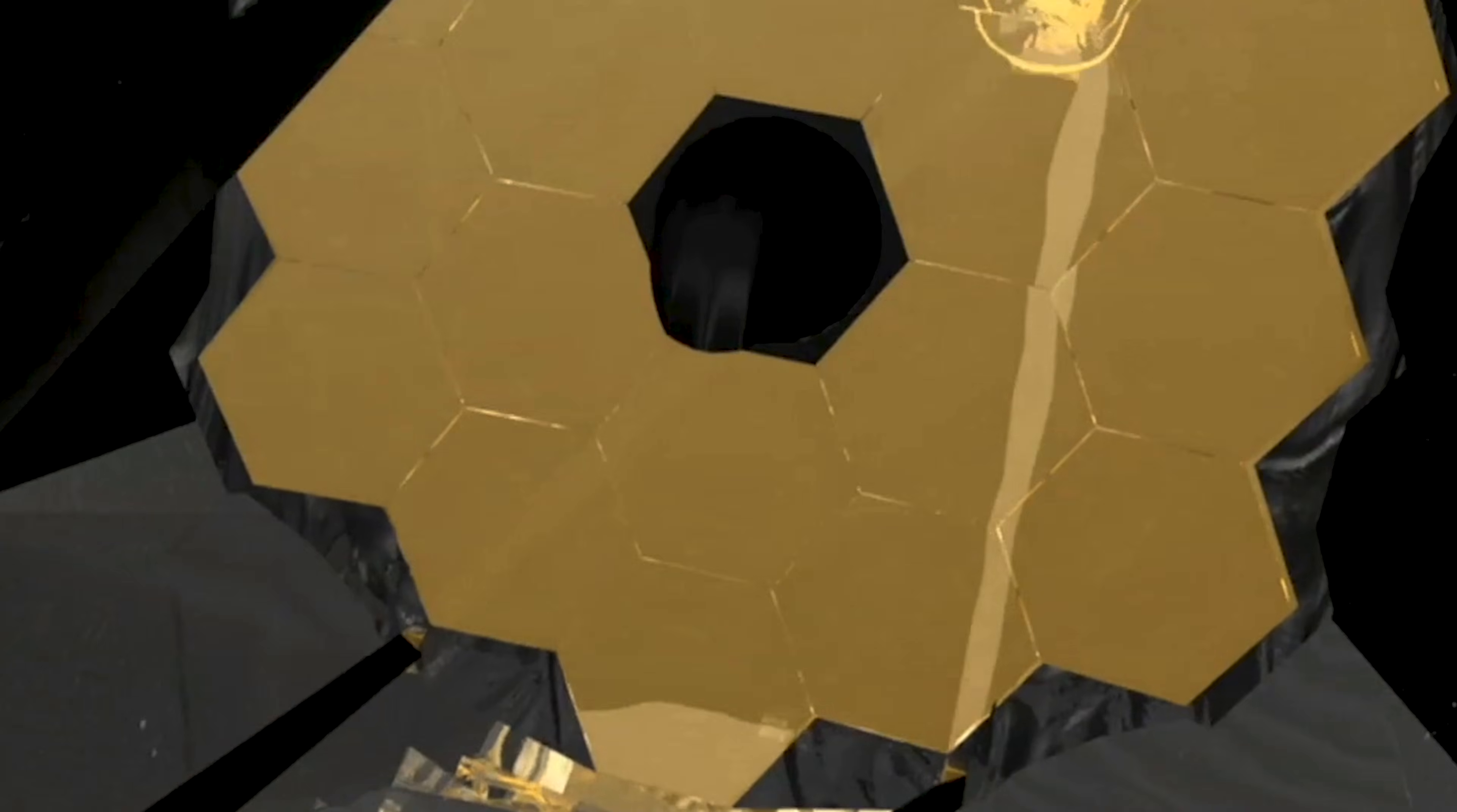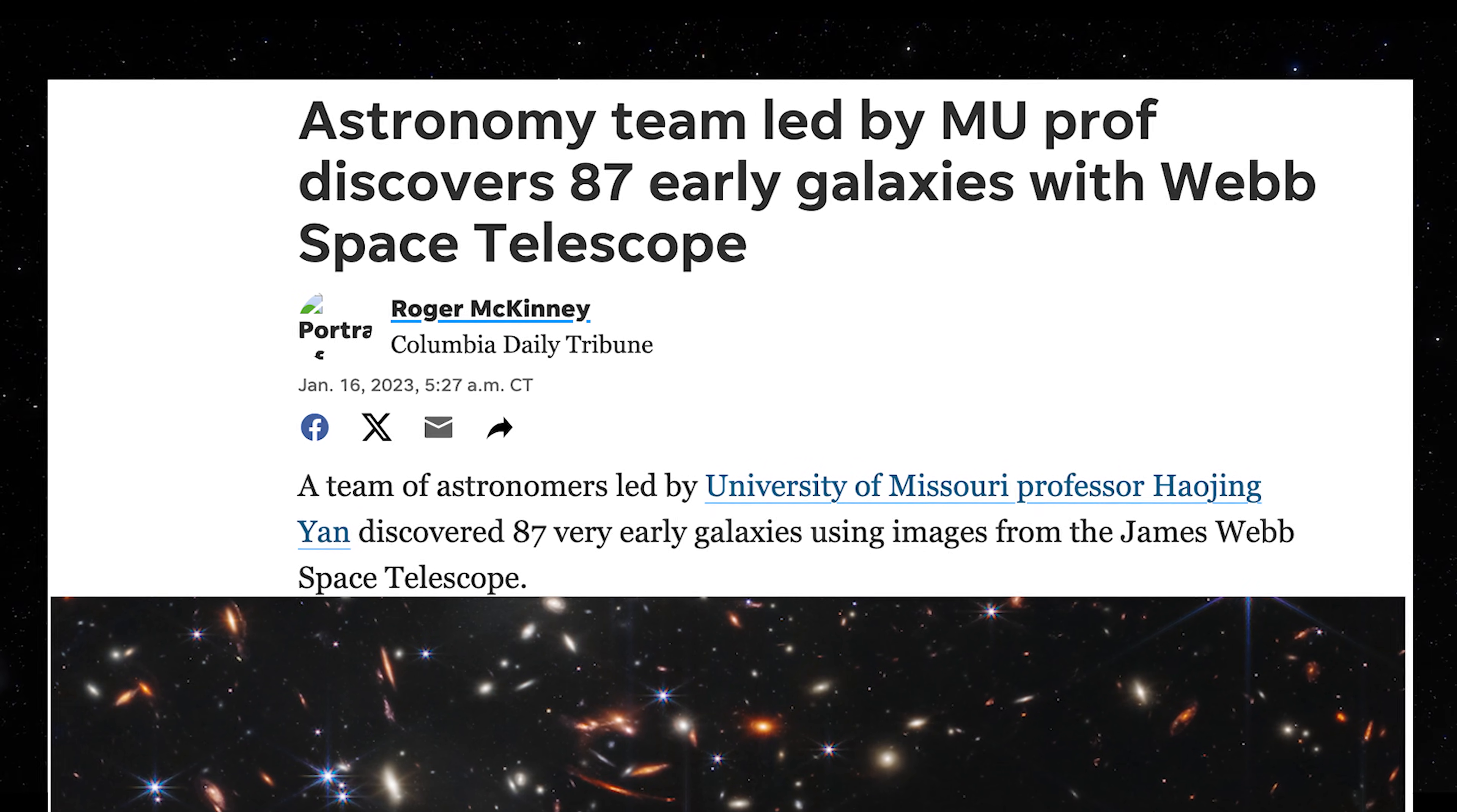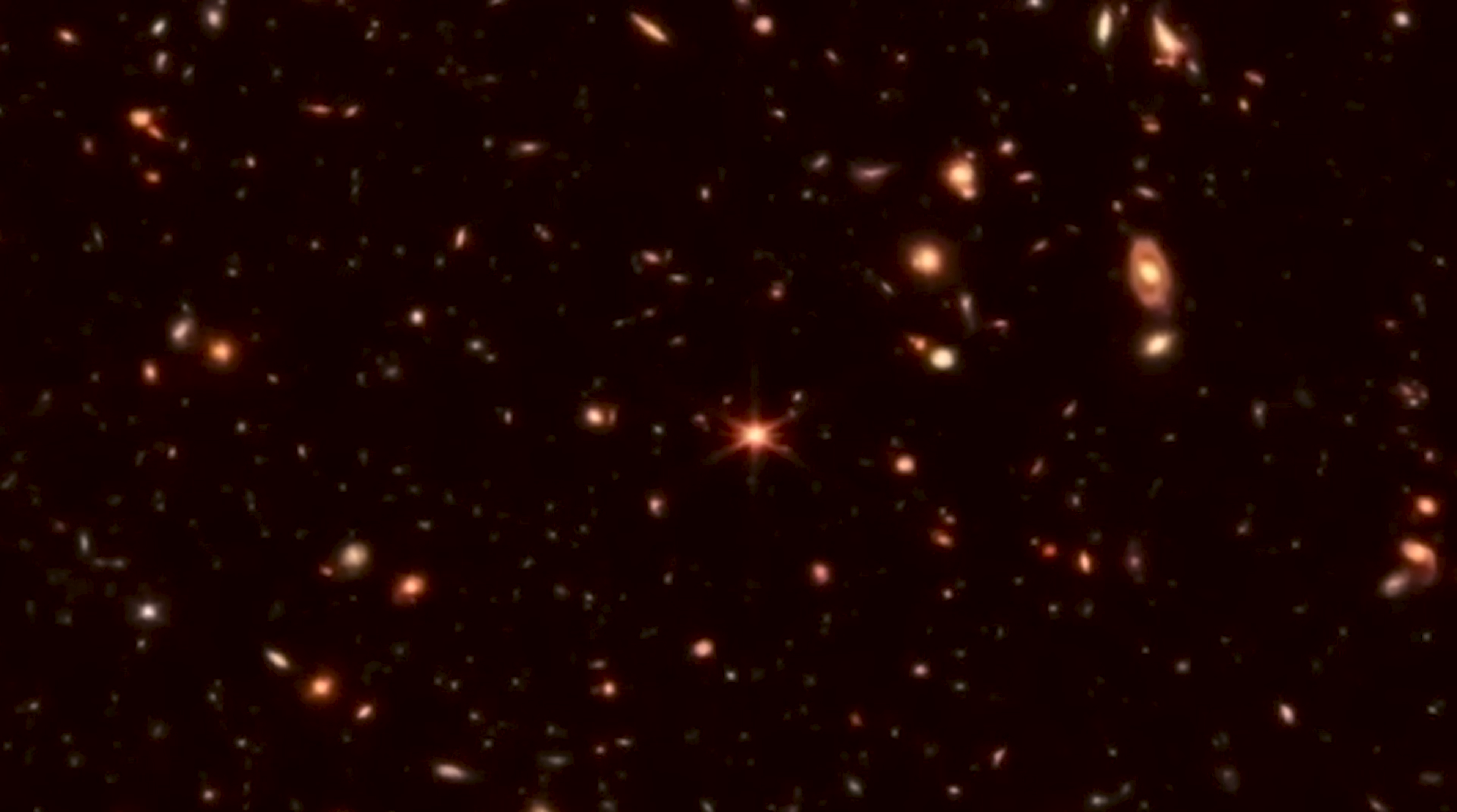When astronomers aimed Webb at the deepest regions of space, they expected to see the universe learning how to be a universe. Small stars, tiny galaxies, the first tentative steps of structure. Instead, they found brilliance. Massive objects shining intensely in a universe that should still be dim. A study published in the Astrophysical Journal identified 87 candidate objects that may have existed just 200 to 400 million years after the Big Bang. Even confirming a handful of them would be a serious problem for cosmology. One of the researchers, Hao Jingyan, put it bluntly. If these objects are real, our understanding of early galaxy formation is fundamentally wrong.